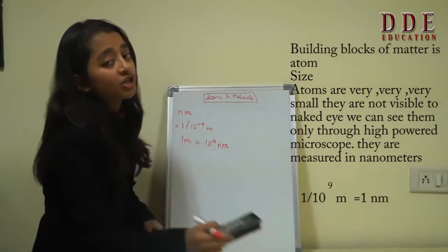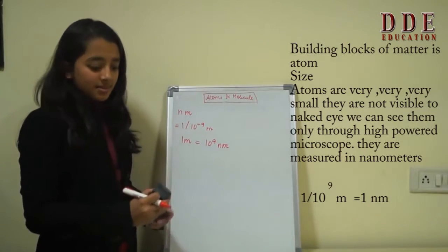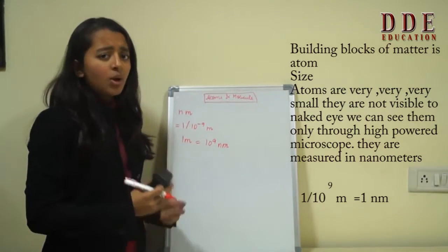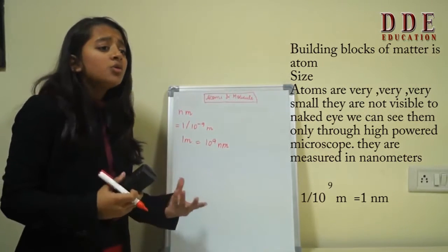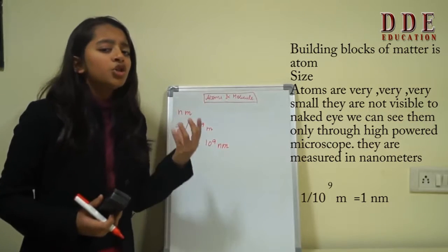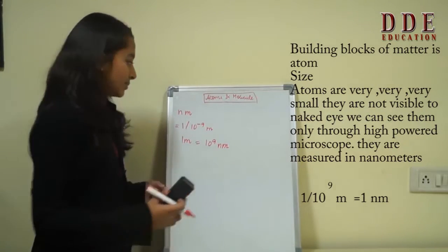Now let us continue our journey on exploring atoms. I have just told you about the size of the atom. Now let us concentrate on how these atoms are represented and how John Dalton thought about representing these atoms.